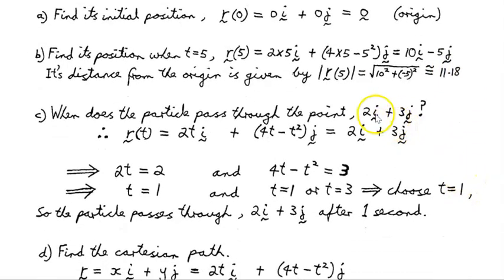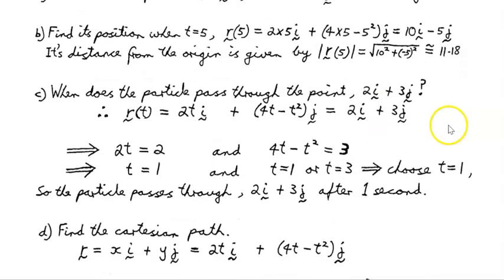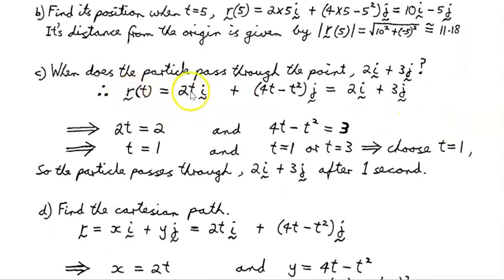When does the particle pass through the point 2i + 3j? Well, all we do is we take our position vector 2ti + (4t - t²)j and we set it equal to 2i + 3j. And then to solve this, we match up like components. So 2t and 2 go together. They're both the coefficients of the i component. The unit vector in the i direction. So 2t = 2, so that tells us t = 1.